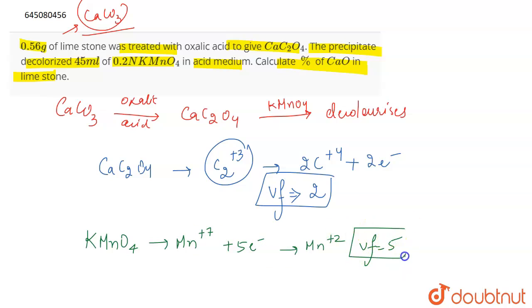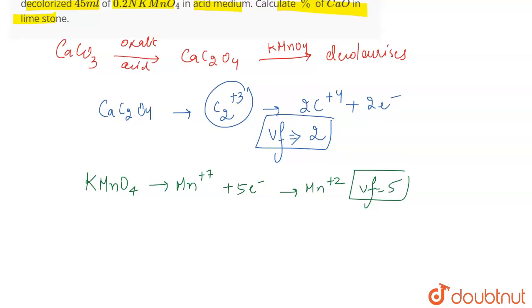From here, we can say that the milliequivalence of calcium carbonate equals the milliequivalence of CaC2O4, which equals the milliequivalence of KMnO4. These are the things involved in this particular reaction.